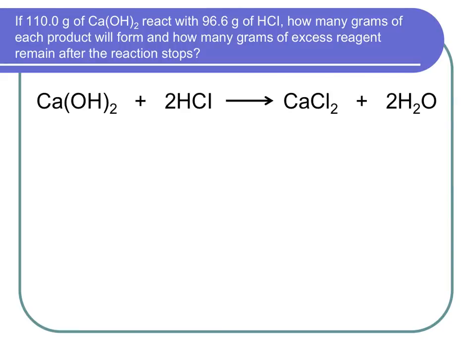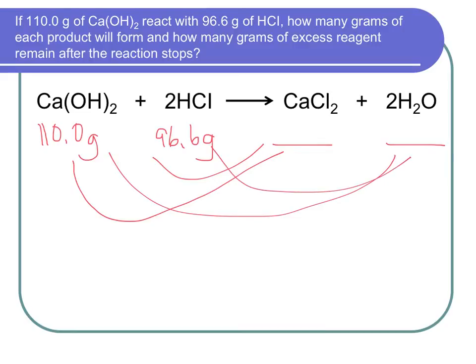Example 3: 110 grams of calcium hydroxide reacting with 96.6 grams of hydrochloric acid. How many grams of each product will form, and how many grams of excess remain? This reaction has two products, so you'll need at least three train tracks to answer Part A. Yes, it's more work, but we'll get through it.